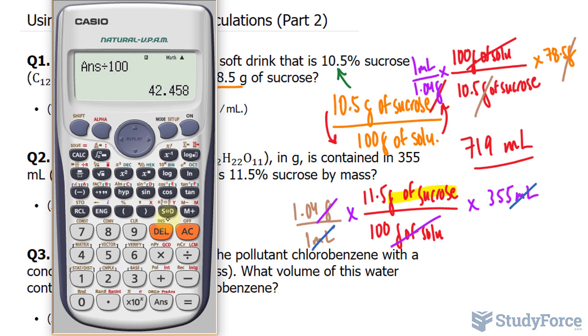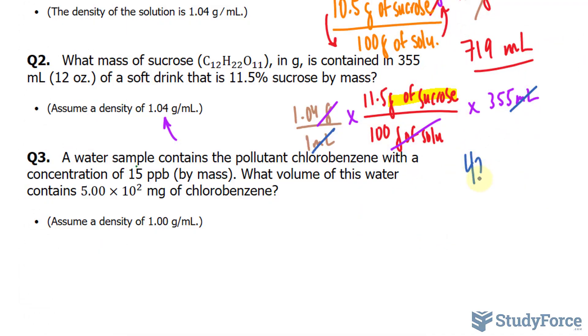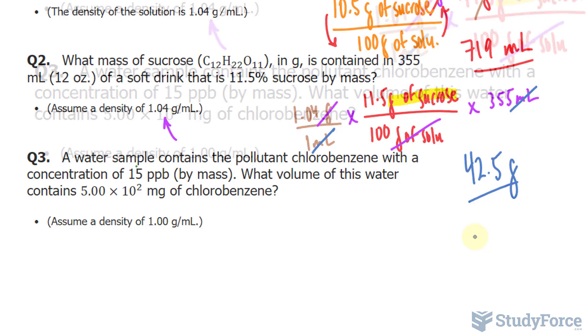This tells us that we have 42.458 grams of sucrose and we need this to three significant figures. 42.5 grams of sucrose is found in this 12 ounce can of soft drink. Let's move on to question number three.